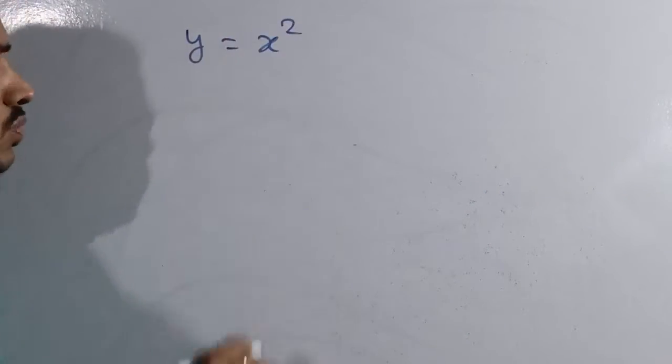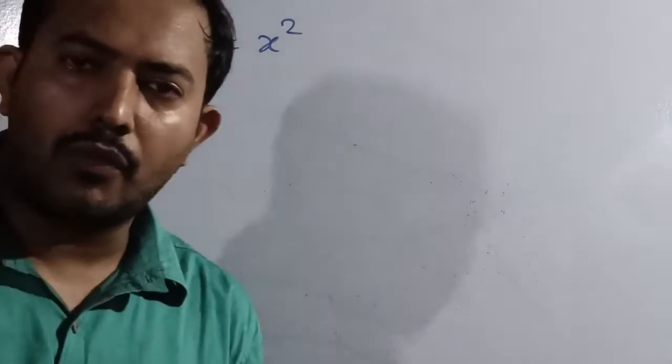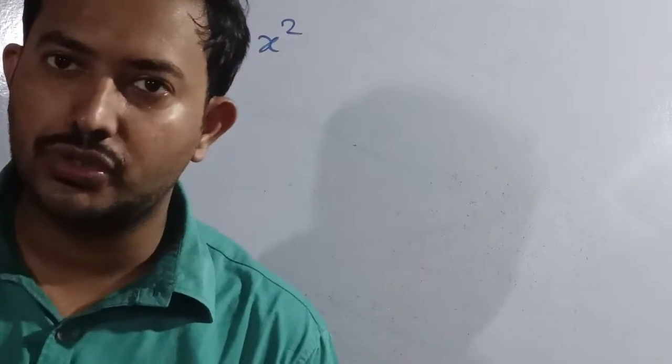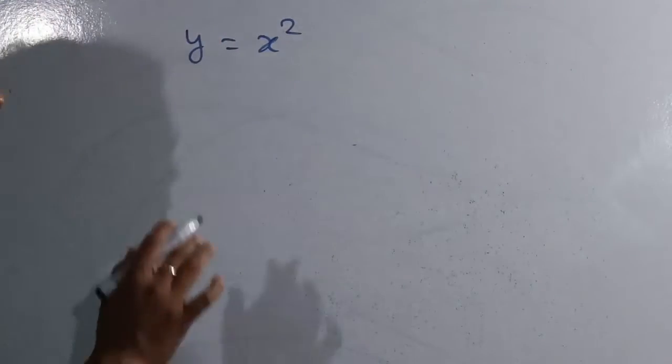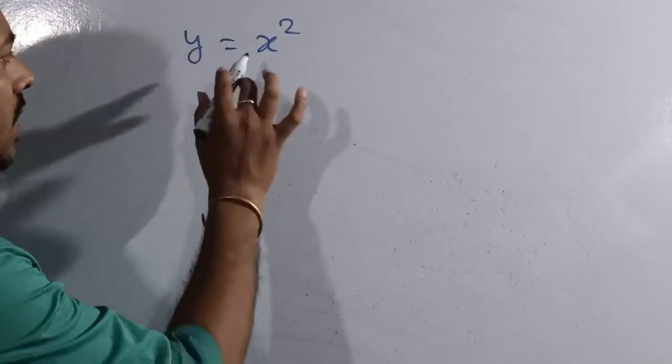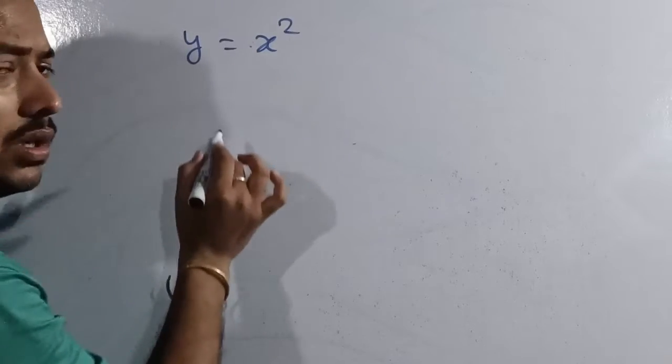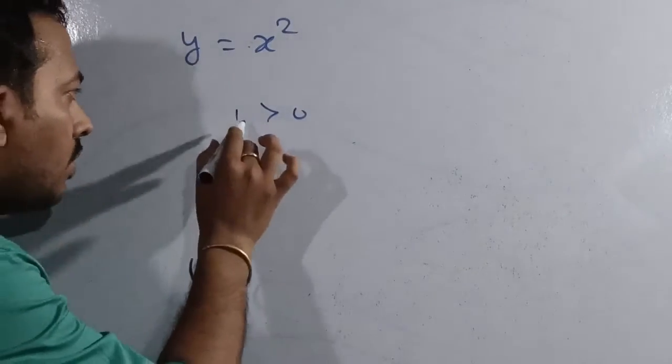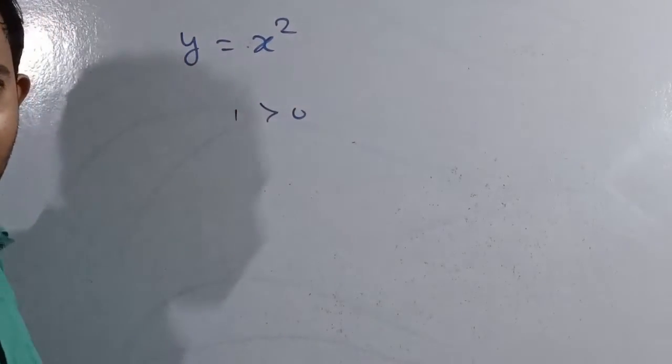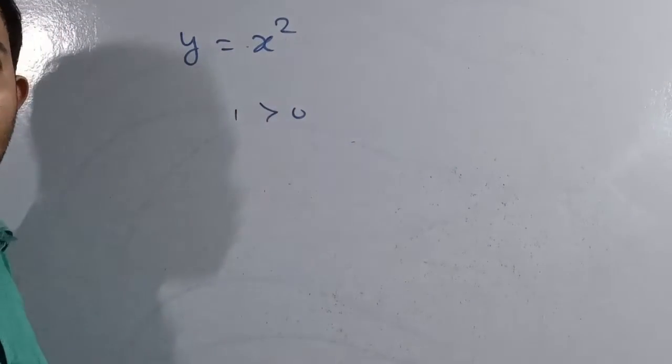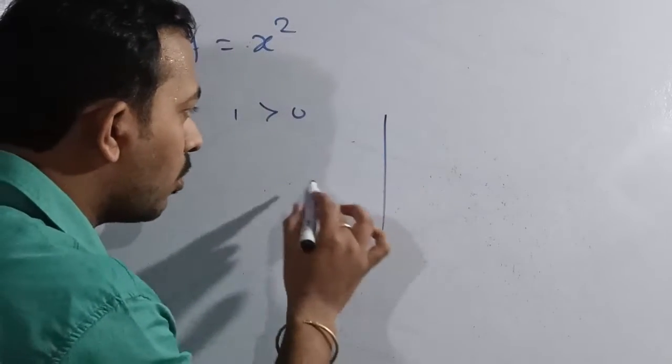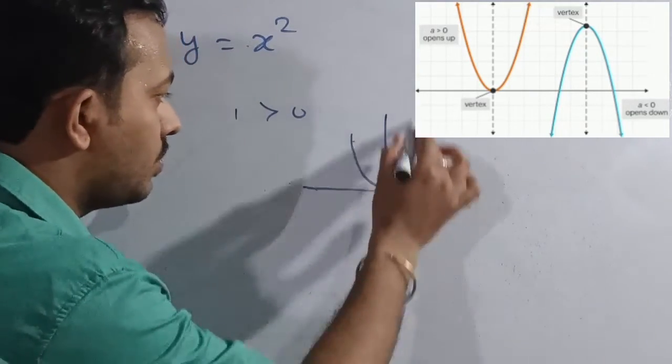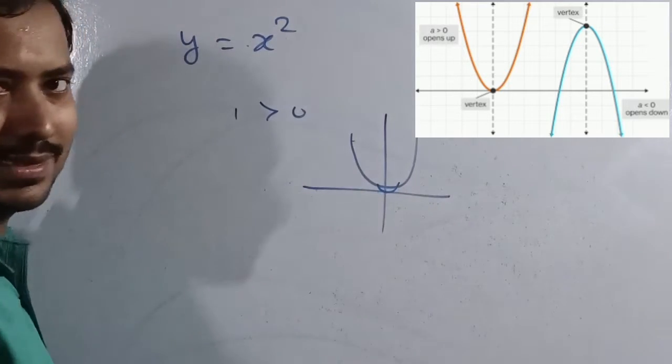If we take y equals x squared, this is one special type of parabola which passes through the center. Here, the coefficient is one, and one is greater than zero. If the coefficient of x squared is greater than zero, then your parabola would be open upward. It will look like this and touch the x-axis.